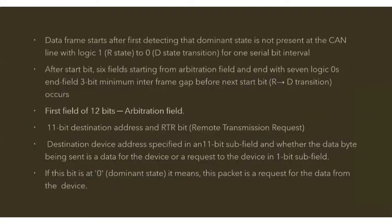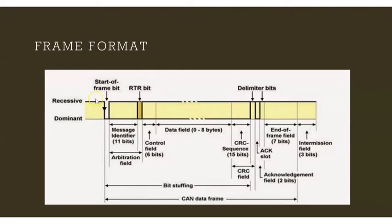The data frame starts after detecting that the dominant state is not present on the bus. Whenever there is a transition from logic 1 to 0, it is considered a start bit or frame start bit. The high state is considered the recessive state (logic 1) and the low state is considered the dominant state (logic 0). So a recessive-to-dominant transition, or logic 1 to 0 transition, is taken as the start bit.